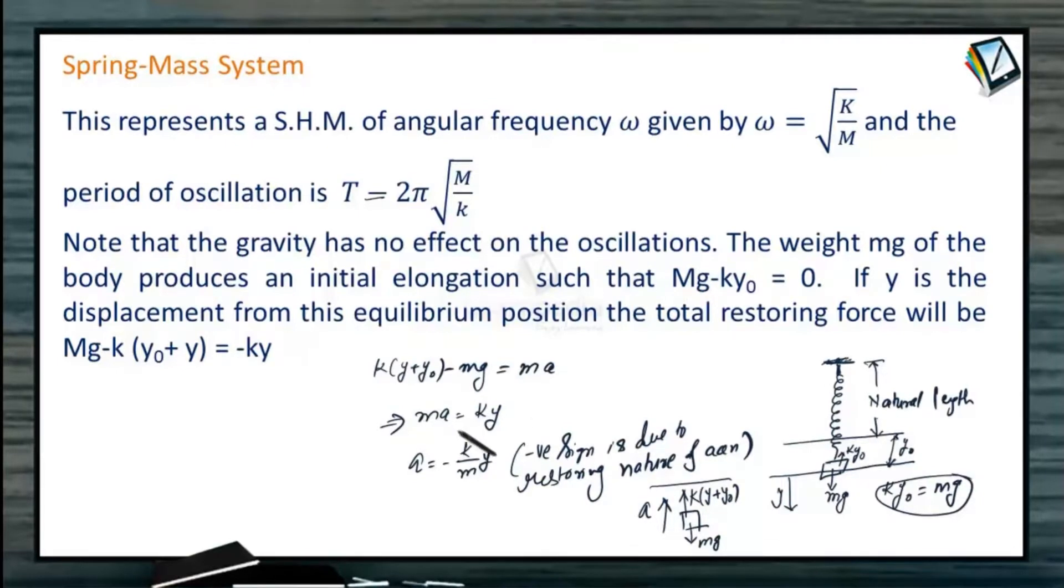We can compare it with minus omega square Y, so omega remains under root K divided by M. Even if the system is made to oscillate vertically, angular frequency remains the same. In case of horizontal oscillation, the frequency of oscillation or time period of oscillation is same.